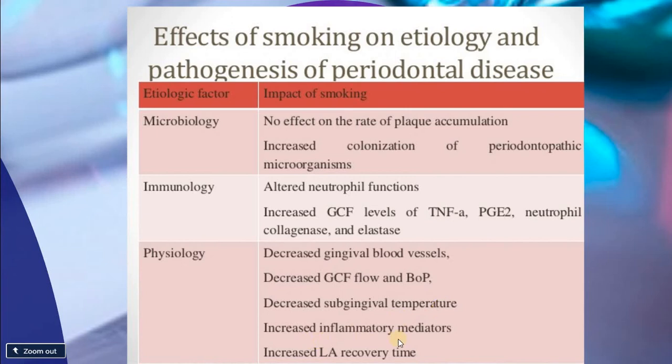Recovery from vasoconstriction following local anesthetic administration takes longer in smokers. There is decreased gingival blood vessel activity, decreased gingival crevicular fluid, and decreased bleeding on probing, due to peripheral ischemia. There is also decreased gingival temperature, leading to less visible wetness, alongside increased inflammatory mediators affecting the immune system and bone and soft tissue. There is also prolonged recovery time from local anesthesia in smokers compared to non-smokers.